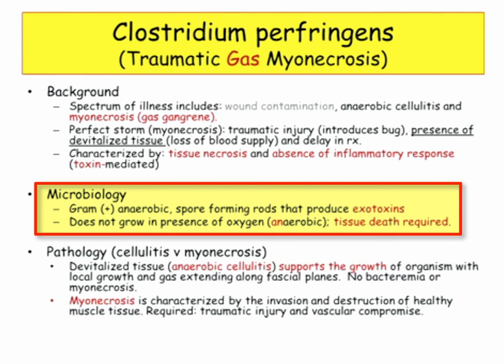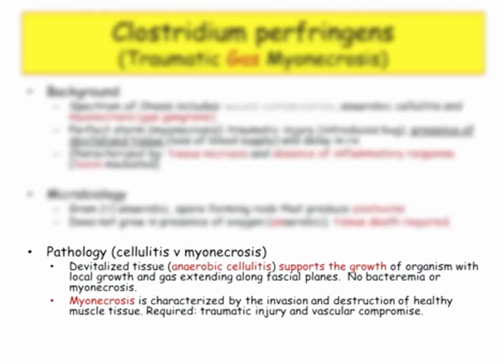C. perfringens is a gram-positive anaerobic rod. It produces spore-forming exotoxins, and they want you to know the exotoxin. Anaerobic tissue death is key — cellulitis supports growth of the organism, and ultimately it spreads along tissue planes, fascial planes. No bacteremia; this is local. It's myonecrosis in the tissue planes, with invasion and destruction of healthy muscle tissue. Trauma and vascular compromise are the predisposing factors.